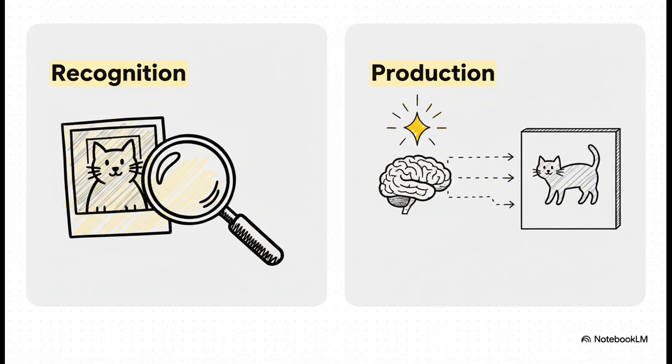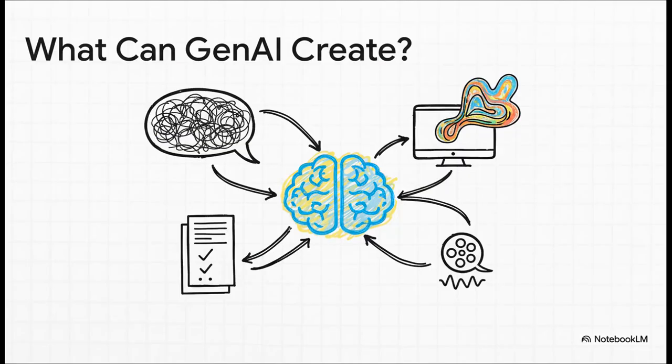On the left, you have traditional AI. It's all about recognition. Is this email spam? Is there a cat in this photo? But generative AI on the right is all about production. It doesn't just find the cat in the photo. It creates a brand new photo of a cat that has never, ever existed. That is the fundamental jump. And what it can create is just exploding.